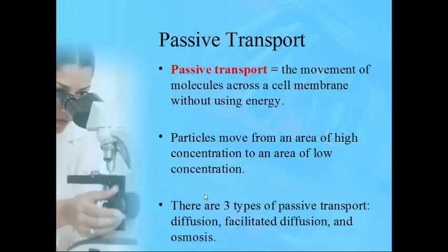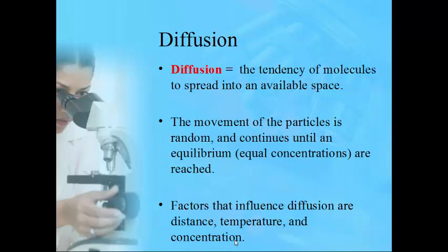There are three types of passive transport: diffusion, facilitated diffusion, and osmosis — all three are classified as passive because they don't require energy. Diffusion is the tendency of molecules to spread in an available space. The key thing is that particles move randomly until there's equal concentration throughout — an equilibrium. Factors that influence diffusion include temperature, distance, and concentration.